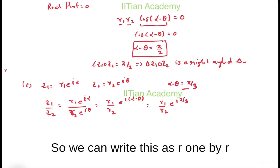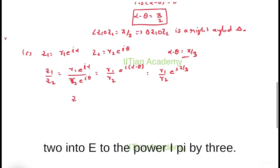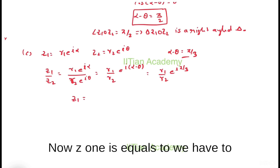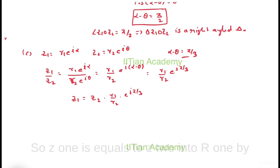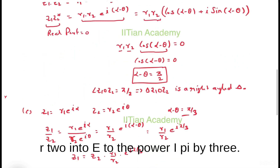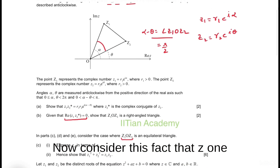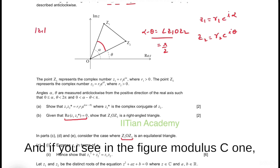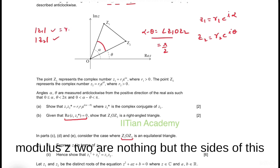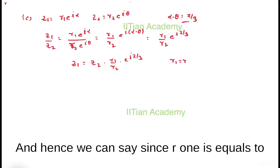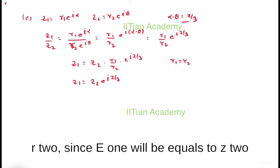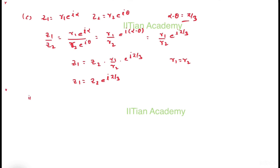So z1 = z2·(r1/r2)·e^(iπ/3). Since z1Oz2 is an equilateral triangle, |z1| and |z2| are sides of this triangle which equal r1 and r2 respectively. Hence r1 = r2, and therefore z1 = z2·e^(iπ/3).